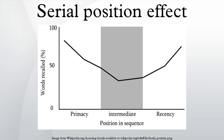In another experiment by Brody and Murdoch, the recency effect was found to be partially responsible for the primacy effect. Using the overt rehearsal technique, they found that in addition to rehearsing earlier items more than later items, participants were rehearsing earlier items later on in the list. In this way, earlier items were closer to the test period by way of rehearsal and could be partially explained by the recency effect.